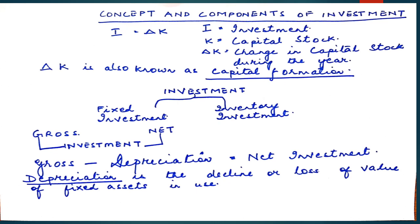Investment is split up into fixed investment and inventory investment. Fixed investment is the investment made on fixed assets such as plant and machinery. Inventory investment refers to the stock of goods that lie unsold in the godowns. It is not necessary that entire sales take place at one go; finished and semi-finished goods or raw material which lie unsold constitute inventory investment, which is closing stock minus opening stock.